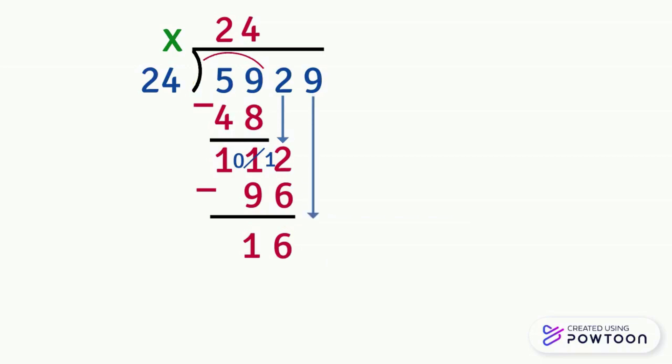Similarly we will bring down 9 and we put it next to 6 and now we have the number 169 and we want to divide it by 24. Then we are going to repeat the same steps. We hide the last digit of each number. In the number 169 we hide the 9 and in the number 24 we hide the 4 and we say 2 times what gives us 16? It's 2 times 8 which is 16.